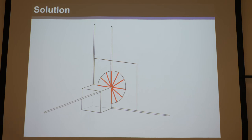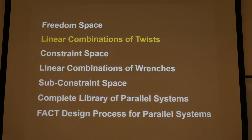Freedom spaces are a picture that shows you every way a system could move at a glance. They are essentially the linear combination of the twists or degrees of freedom they represent — showing you all the combinations of the independent degrees of freedom and all the permissible motions.